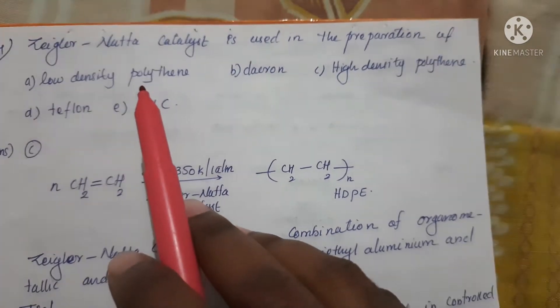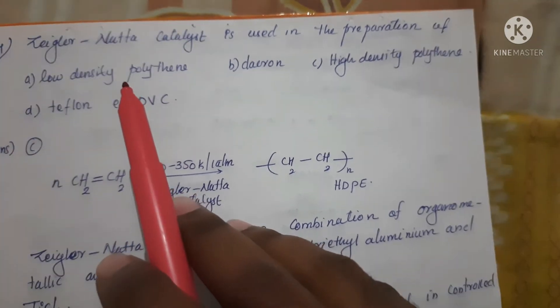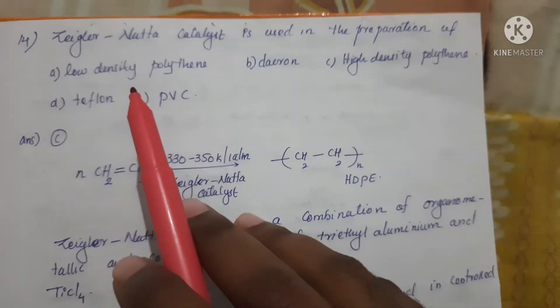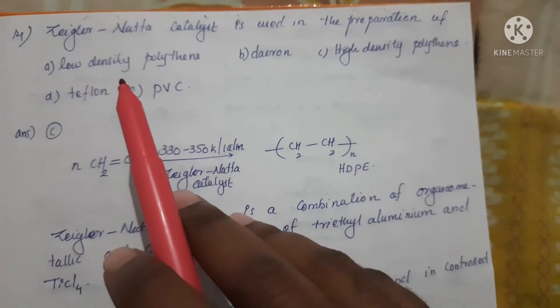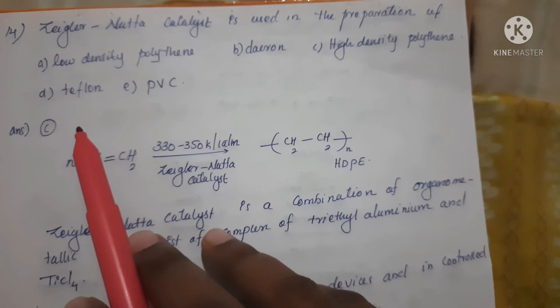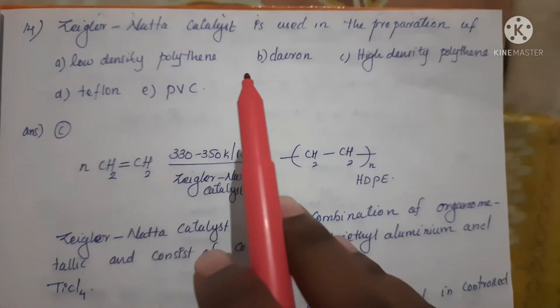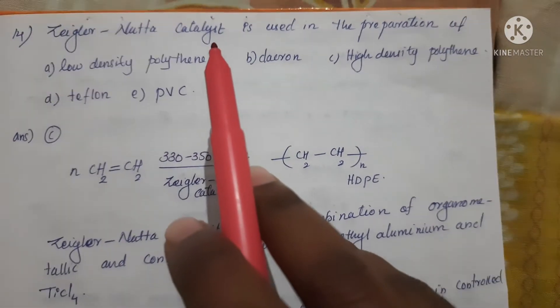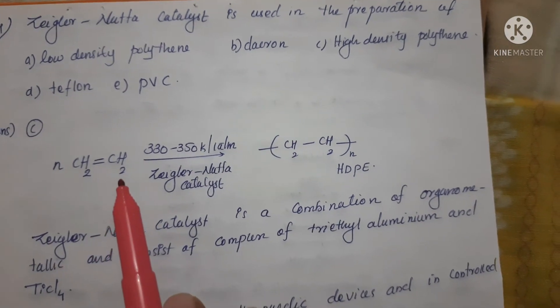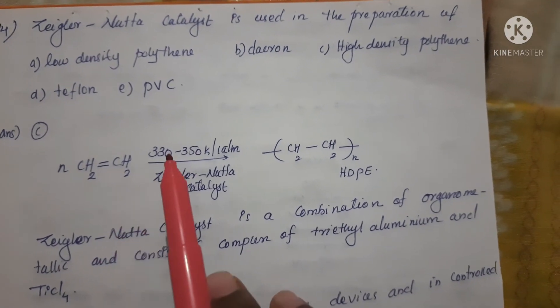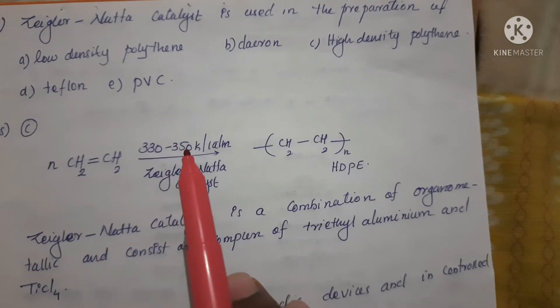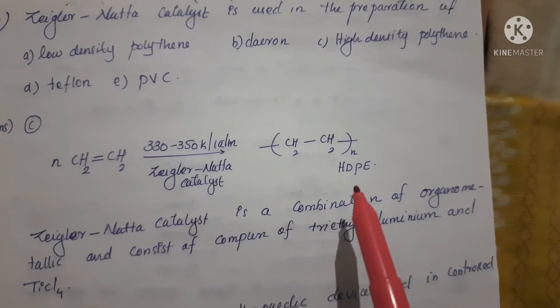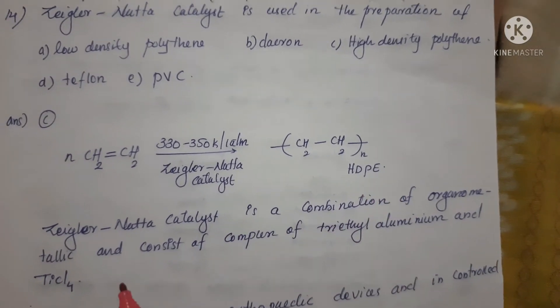Ziegler-Natta catalyst for polymers - we've already done this in previous videos. Correct answer is Option C, high-density polyethene. Ethylenes under temperature of 330 to 350 Kelvin and 1 bar atmosphere in presence of Ziegler-Natta catalyst form high-density polyethylene.